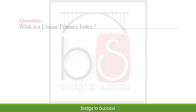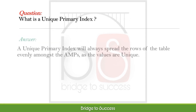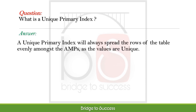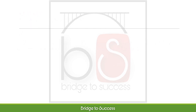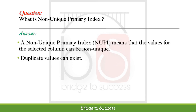What is a unique primary index? A unique primary index will always spread the rows of the table evenly amongst the AMPs, as the values are unique. What is a non-unique primary index? A non-unique primary index means that the values for the selected column can be non-unique. Duplicate values can exist.